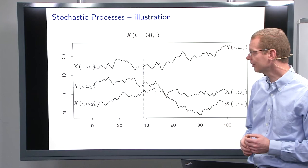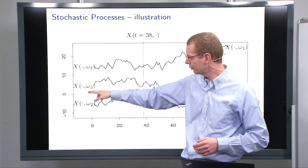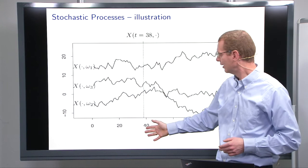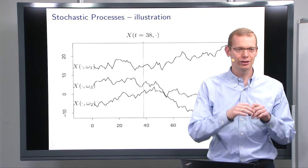As an example, here we have three different realizations, omega 1, 2, and 3. And if you look at a particular time point, then you have a distribution here where you have three realizations of that particular random variable at that particular point in time.